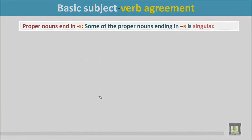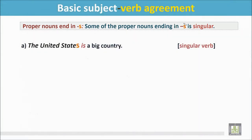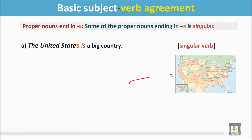Proper nouns ending in S. Some proper nouns ending in S are singular. Though the nouns add S, they still carry singular meaning. See the example: The United States is a big country. The proper noun 'United States' ends in S, but it is a singular noun, so the verb is singular.